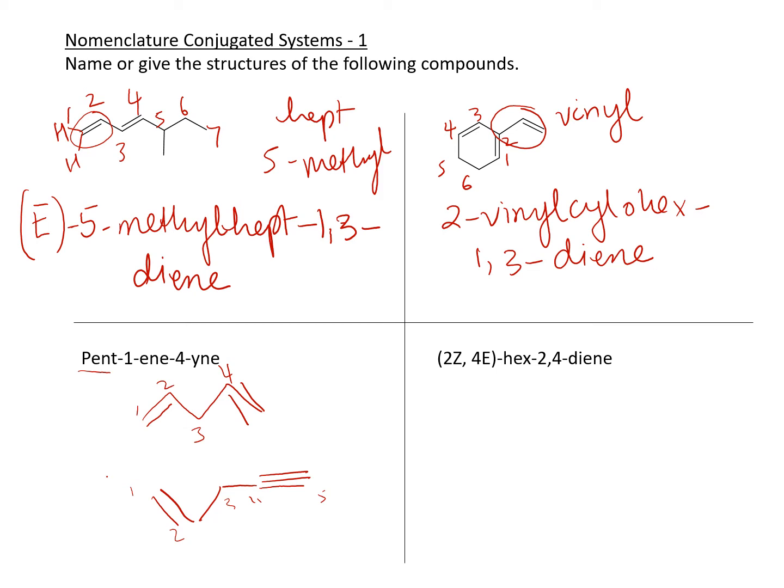Let's look at the next one. And this one, I have a hex-2,4-diene, and I'm also given the stereochemistry over here. So let's go ahead and draw the structure out first without any stereochemistry. So we know where our double bonds are. So it's a hex. So six: one, two, three, four, five, six.